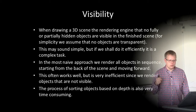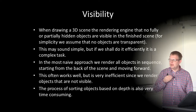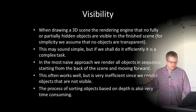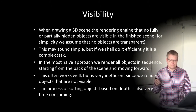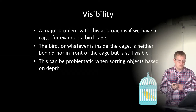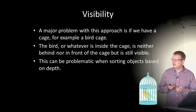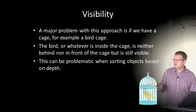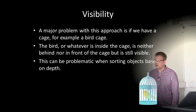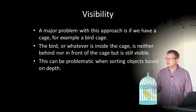In the most naive approach, we render all objects in sequence, starting from the back of the scene and moving forward, so forward objects are rendered on top of back objects. But this is very inefficient since we render a lot of objects that are not visible, and sorting objects based on depth is also very time consuming. A major problem with this approach is if we have a cage, for example a bird cage — the bird inside is neither behind nor in front of the cage but is still visible, which can be problematic when sorting objects based on depth.